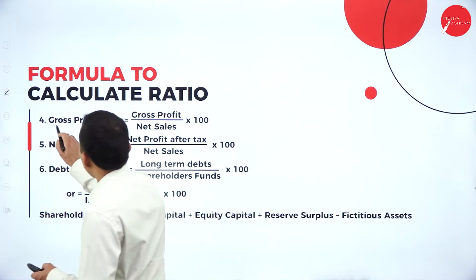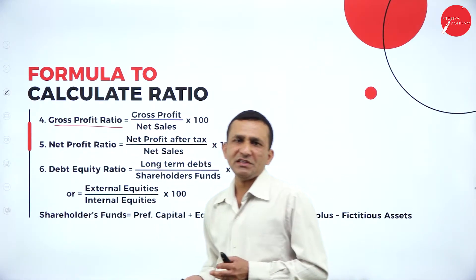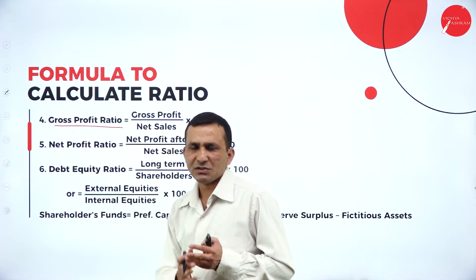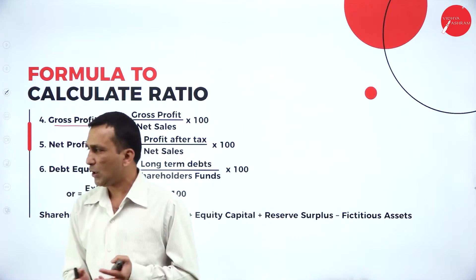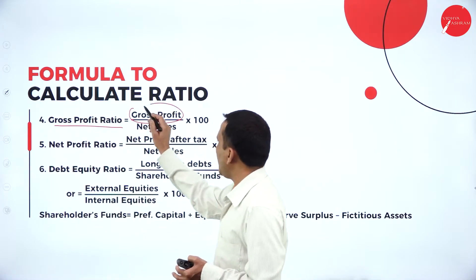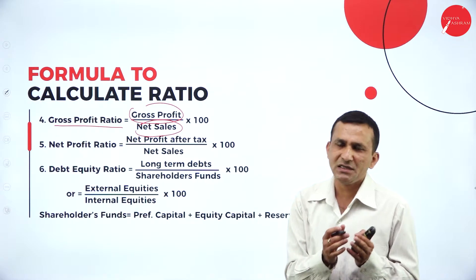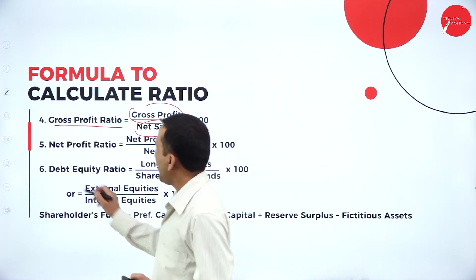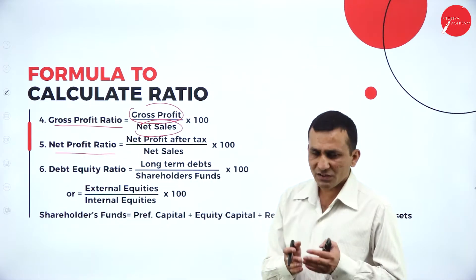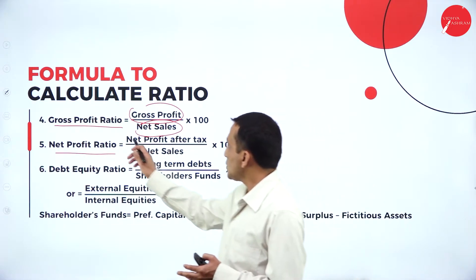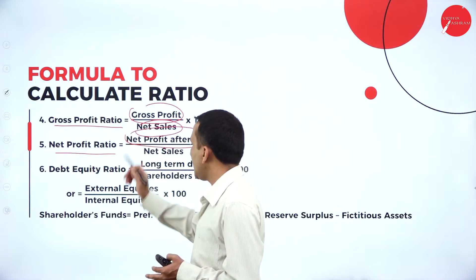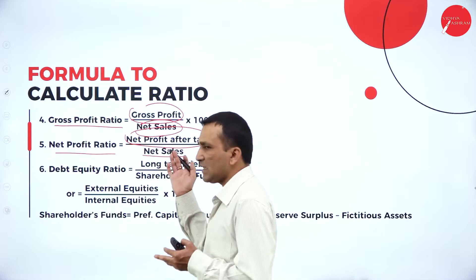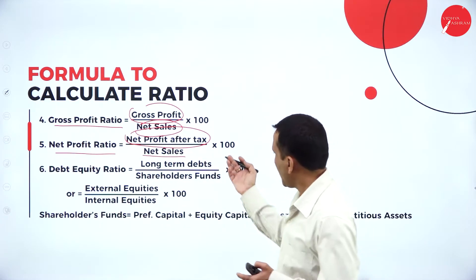Moving to the gross profit ratio, which comes under profitability ratio. Gross profit is related to the trading account. The formula is gross profit divided by net sales, where net sales equals gross sales minus sales return, multiplied by 100. Net profit ratio also falls under profitability ratio: net profit after tax divided by net sales, same procedure — gross sales minus sales return.